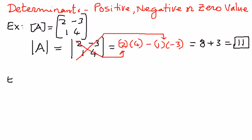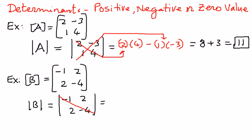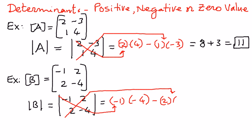Let's look at another example. This time we have a matrix B, and the elements of this matrix are negative 1, 2, 2, and negative 4. We want to find the determinant of this. Determinant of B is equal to: we multiply the elements along the major diagonal, which is negative 1 times negative 4, minus the elements along the minor diagonal, which are 2 times 2.